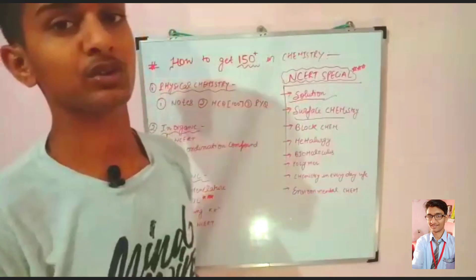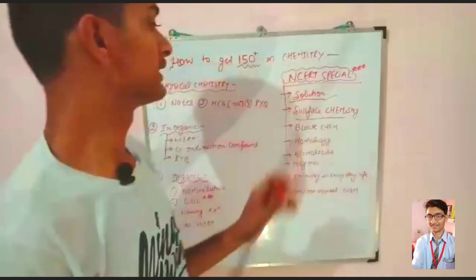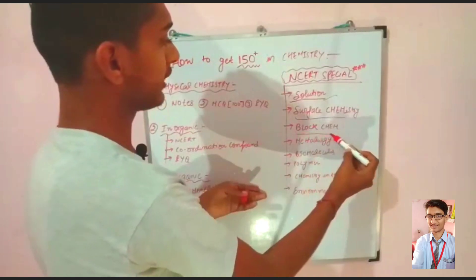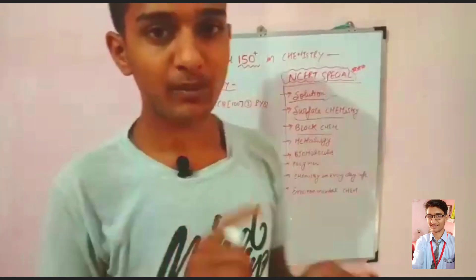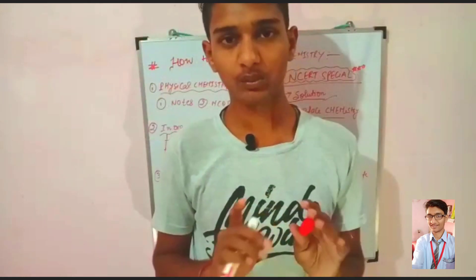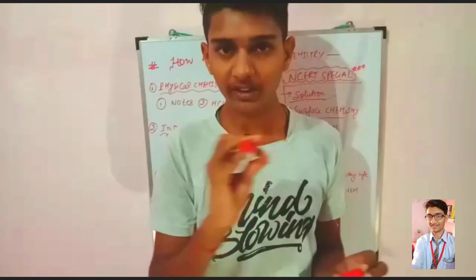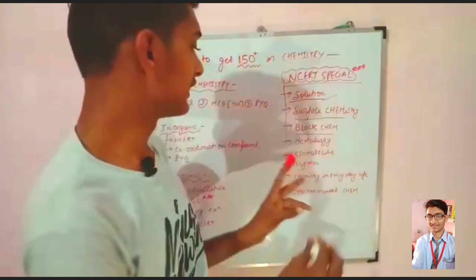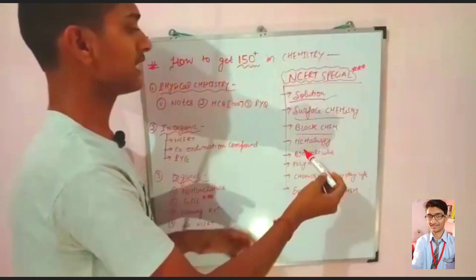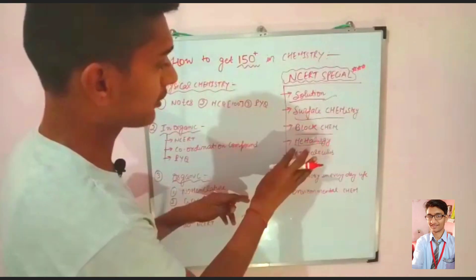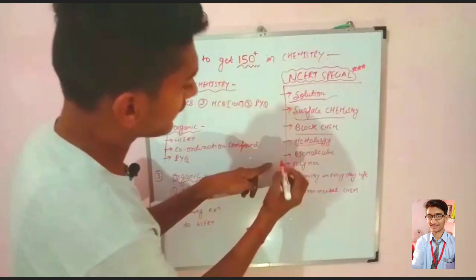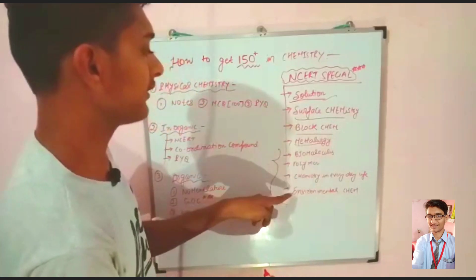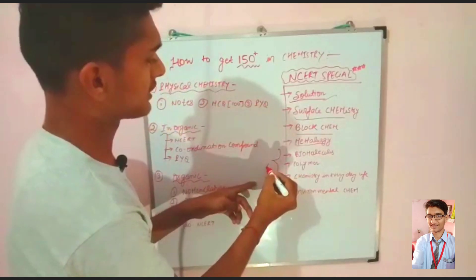After Surface Chemistry, cover Block Chemistry — S block, P block, D block, and F block. Whatever trends are asked in the paper come from NCERT, so block chemistry must be studied from NCERT. Then Metallurgy, which is similar to Surface Chemistry in that everything is written in NCERT. For organic, there are four chapters: Biomolecules, Polymers, Chemistry in Everyday Life, and Environmental Chemistry — all must be studied from NCERT.